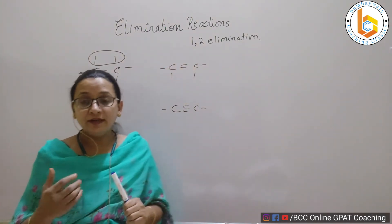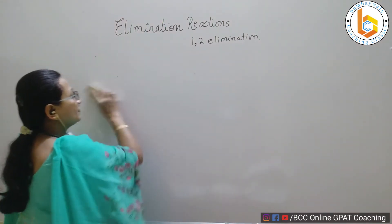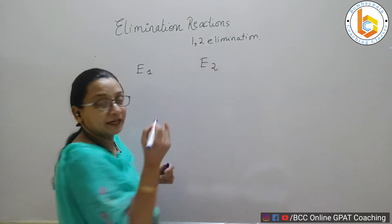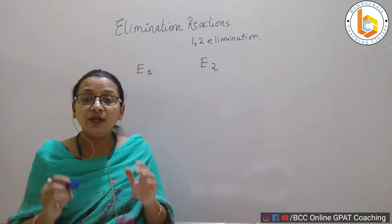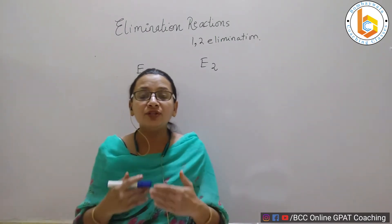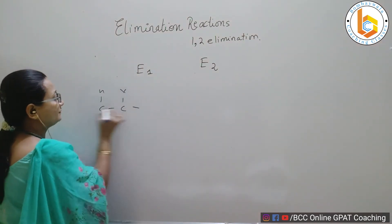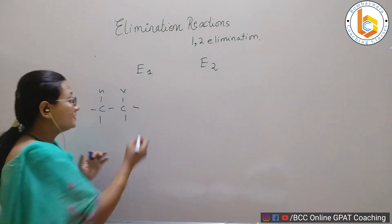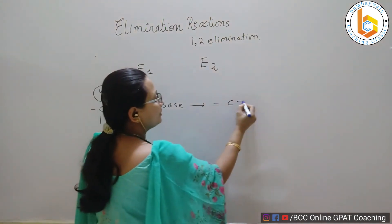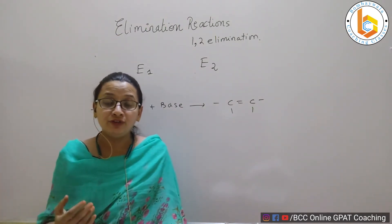When elimination occurs, it follows two different types of mechanisms called elimination first order (E1) and elimination second order (E2). Elimination reactions are performed on alkyl halides. For example, C-C-H-X with a base undergoes dehydrohalogenation and gives C double bond C. This is the simplest example, and there are other alkyl halides from which elimination can occur.